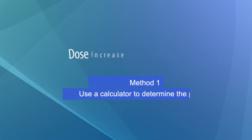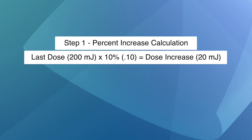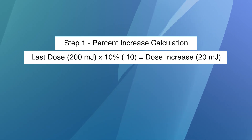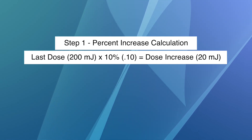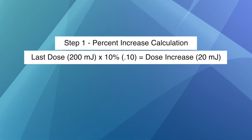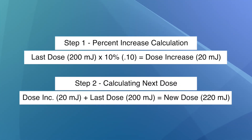For example, if your last dose was 200 millijoules and your doctor wants you to increase each dose by 10%, you would multiply 200 by 10%, or 0.10. 10% of 200 is 20 millijoules. Add that to your last dose, so your next dose would be 220 millijoules. If your doctor has prescribed a maximum dose — for example, 2,000 millijoules — make sure you do not exceed that dose when increasing each treatment.